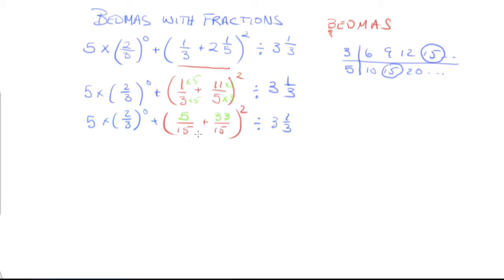Therefore, when adding these two fractions, I've got 5/15 plus 33/15. So how many fifteenths do I have? That's 5 plus 33. That's 38/15 squared. Remember that my bracket is squared, so everything inside must be squared. I can recopy 5 times 2/3 to the power of zero plus, and on the other side, I've got divided by 3 and 1/3. So that takes care of my bracket.